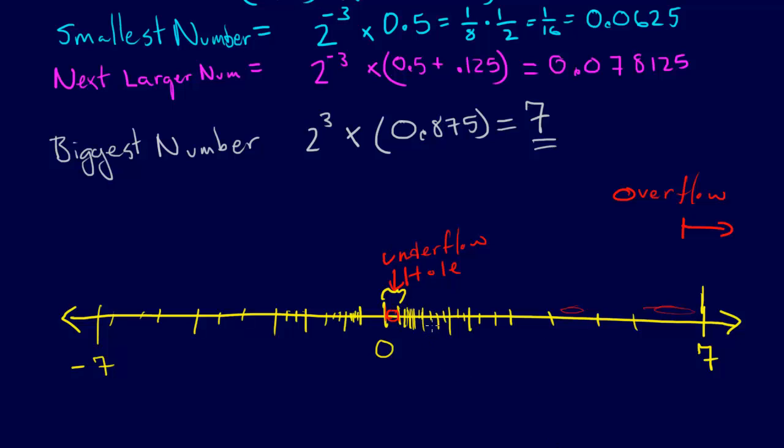The other thing is that the closer to zero you are, the closer together your numbers are, and the further you know away you get, the further apart your numbers are.